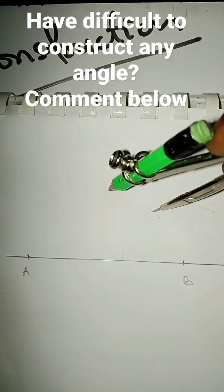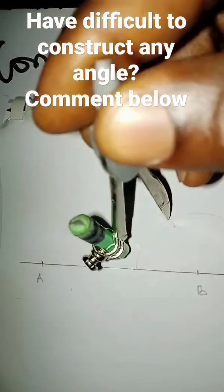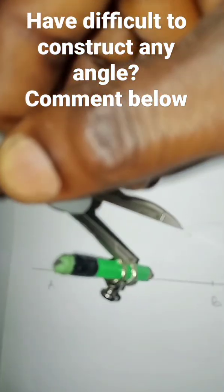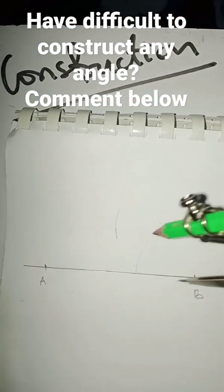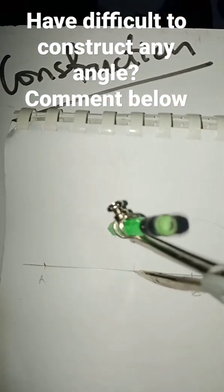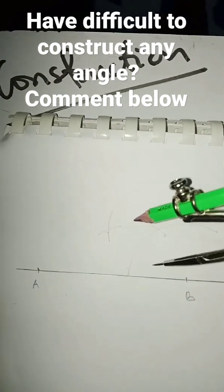So by bisection, you stand at one point of the 60, open more than half of this. Obviously, this is exactly more than half. Make sure it's not on the line. So construct an arc, and then come and stand here and construct another arc to cross it over. So from here to here will be my 30 degrees.